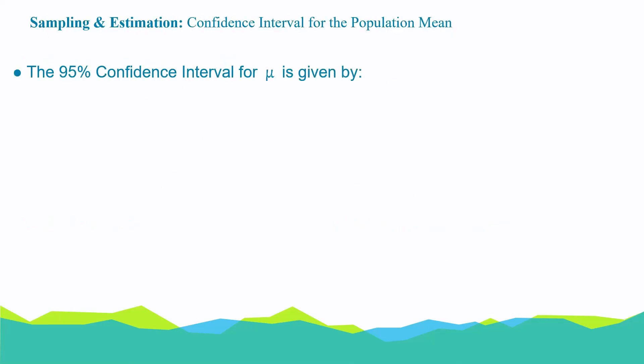So, the 95% confidence interval is x bar minus 1.96 times sigma over root n to x bar plus 1.96 times sigma over root n. In the next lesson, we're going to be looking at some worked examples on how we can find the confidence interval for a given situation.